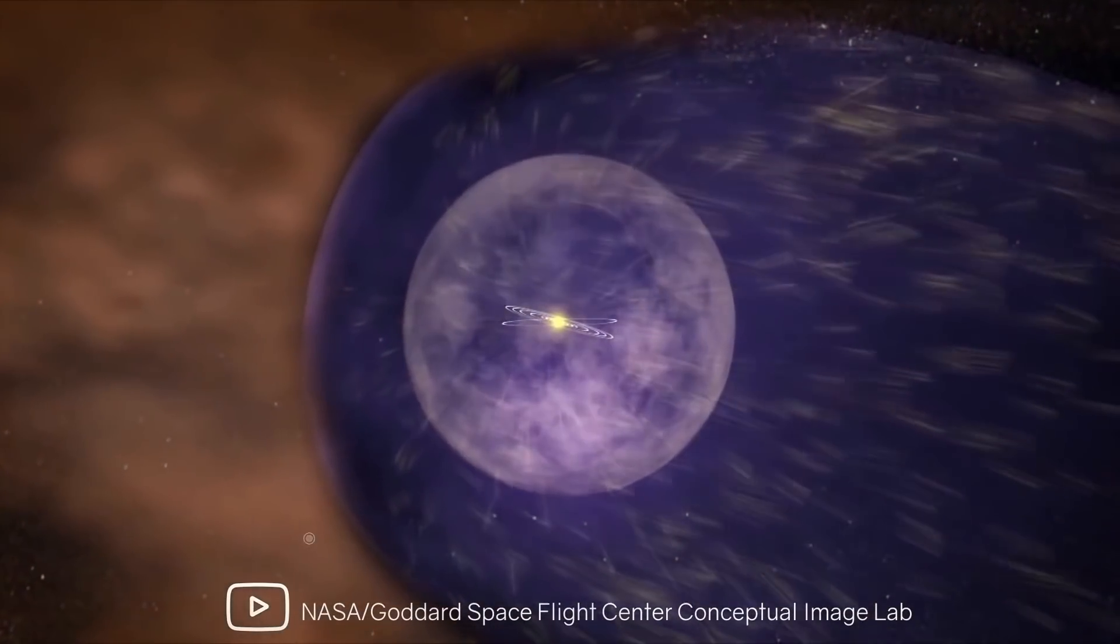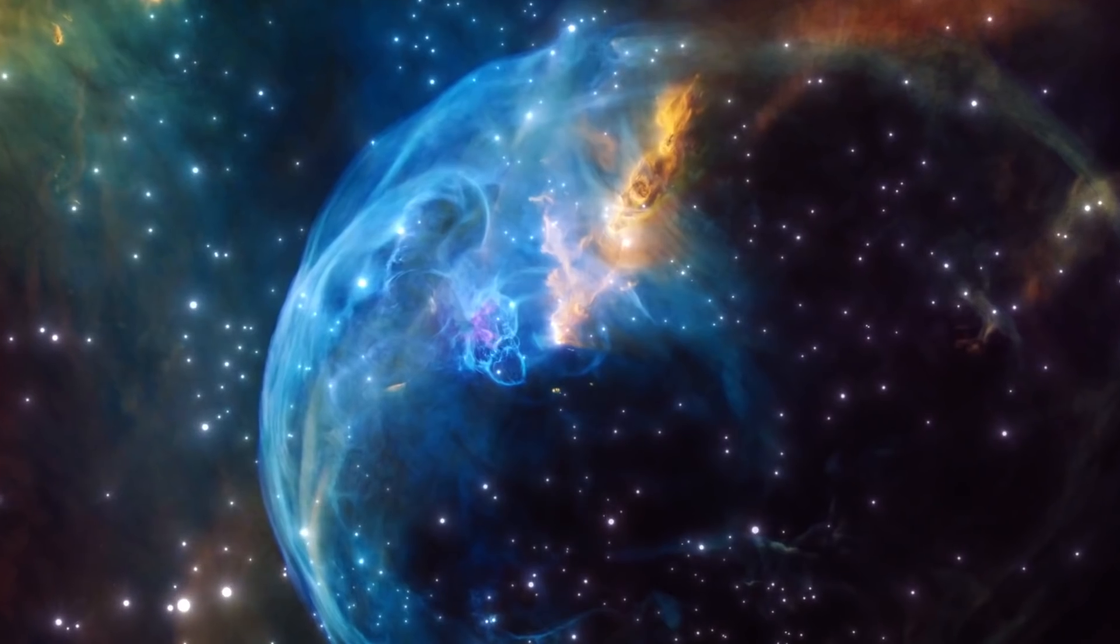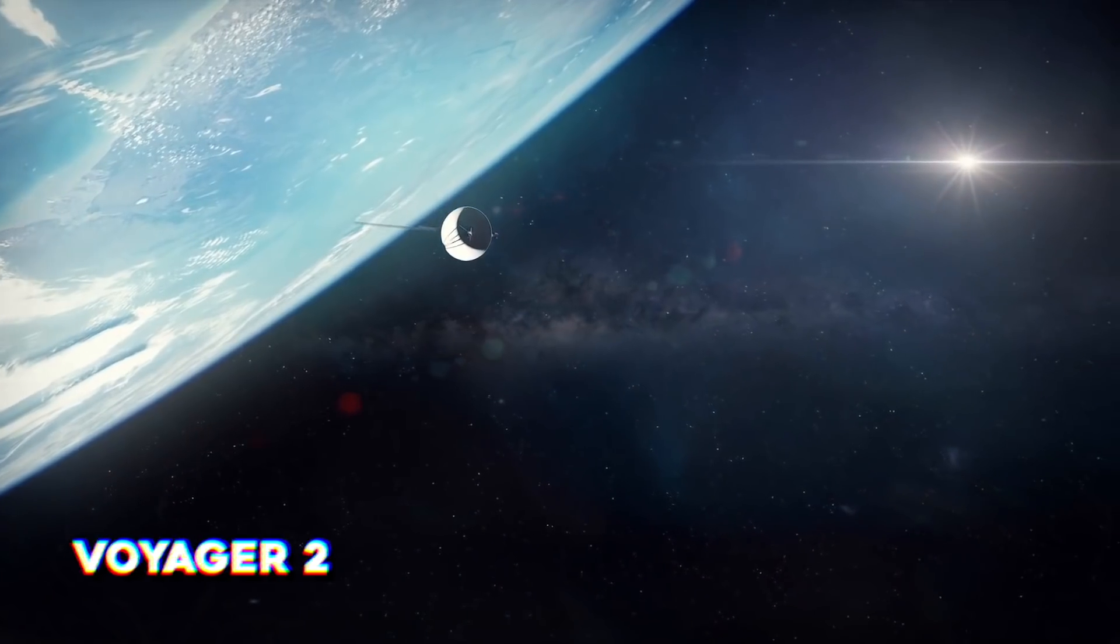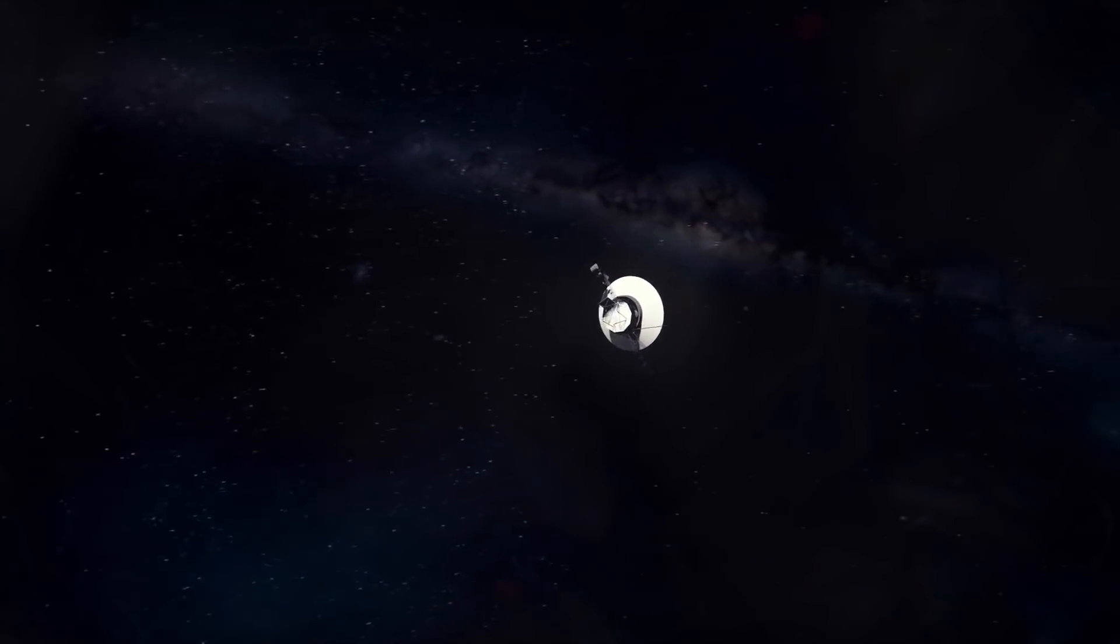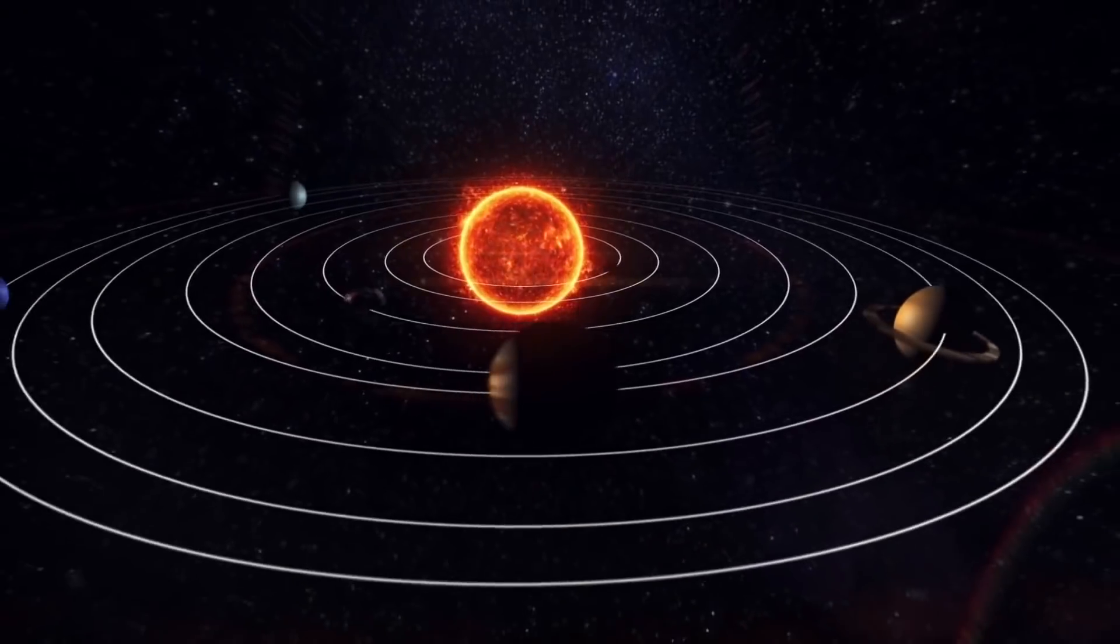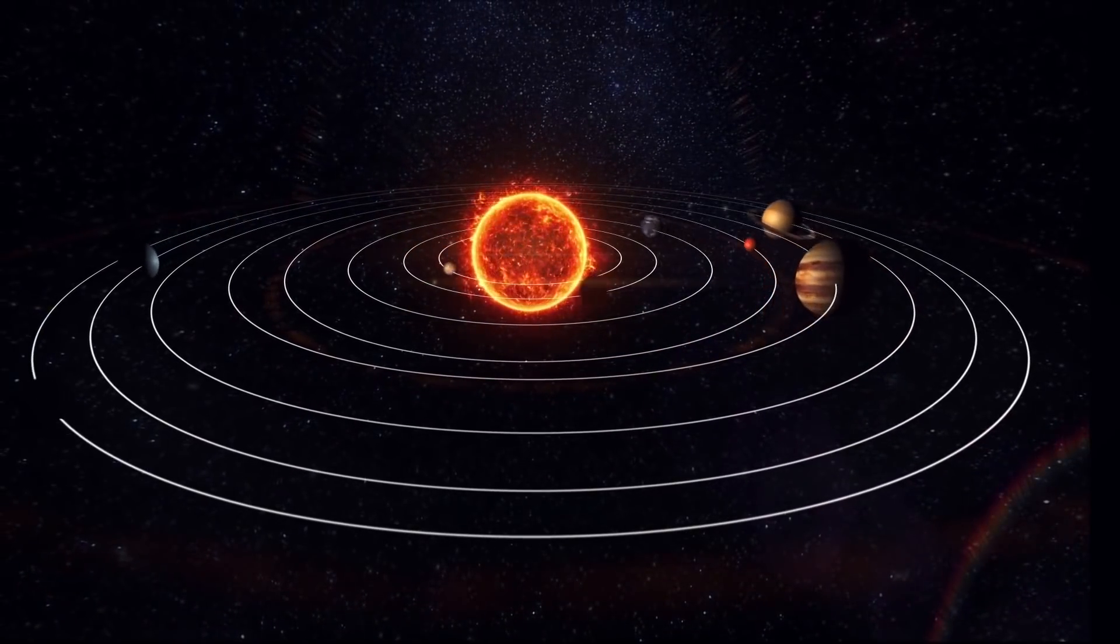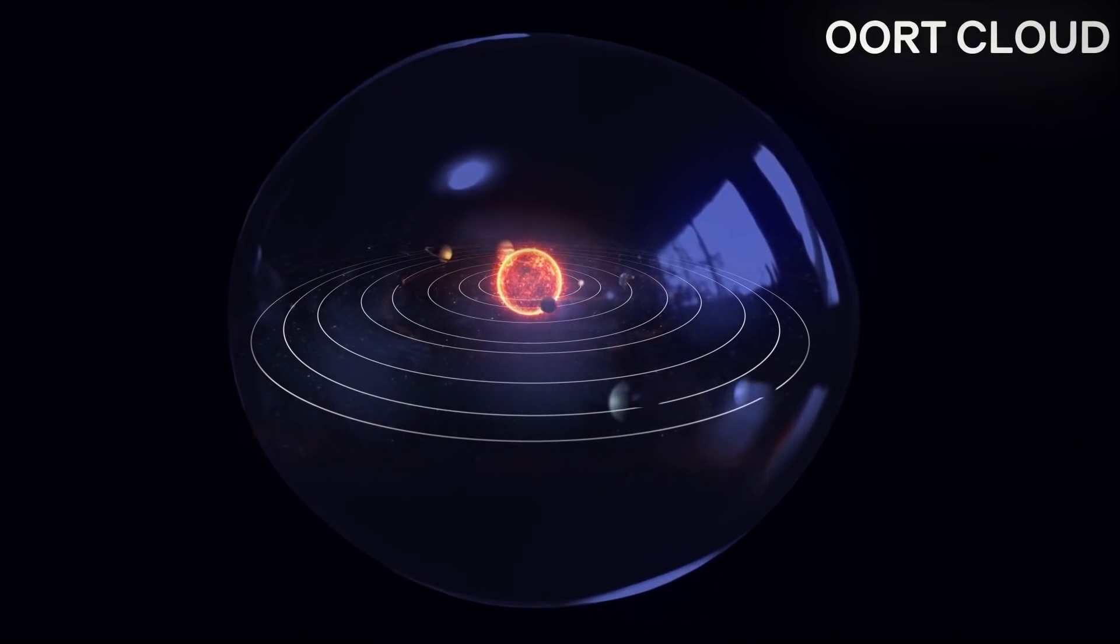In November 2018, Voyager 2, after its 41 years of epic voyage, finally crossed the boundary that marked the limit of the sun's influence and entered interstellar space. However, entering interstellar space didn't finish its job. It started sending data from outside the solar system.